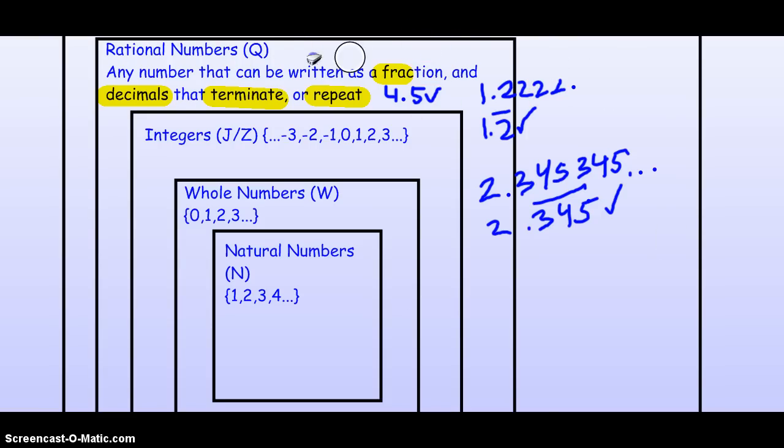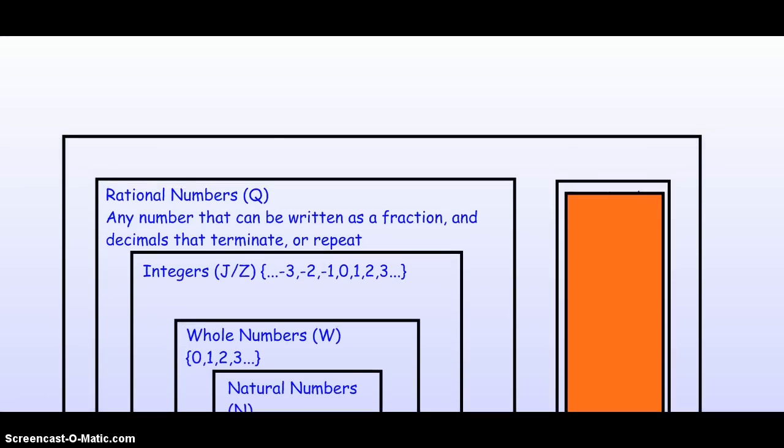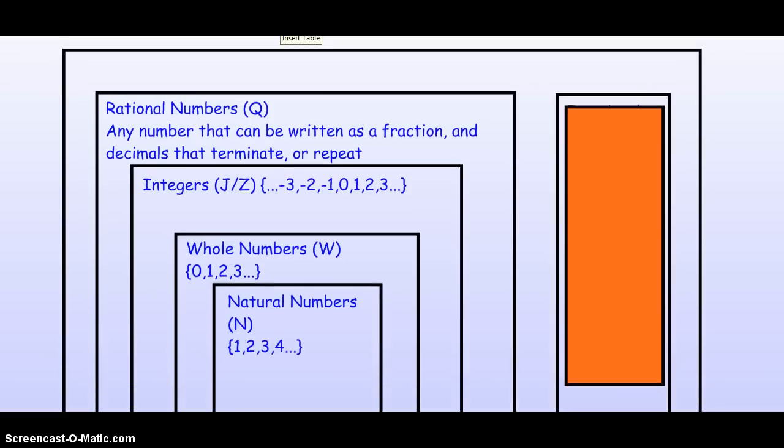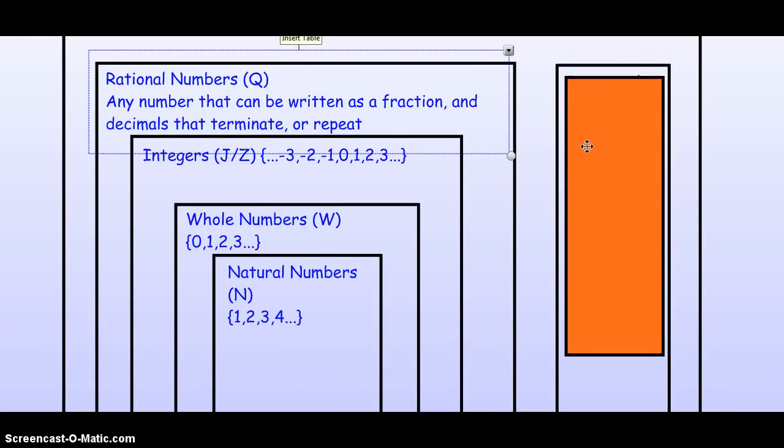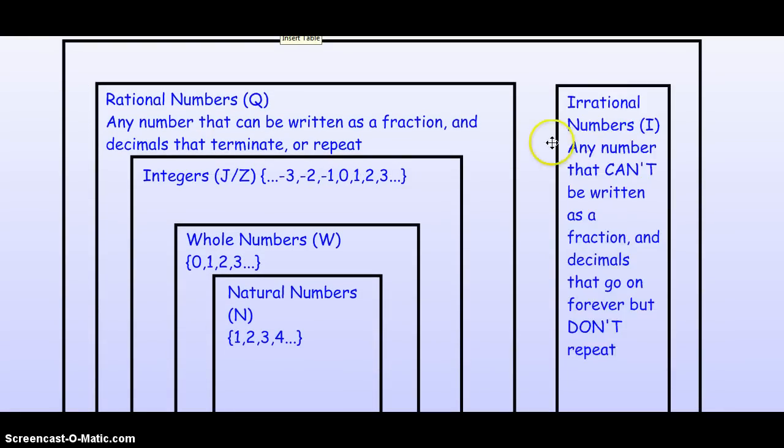Now, let's look at the different set, which is basically the opposite of rational numbers. So, the set that is opposite of rational numbers is called irrational numbers. This is abbreviated by the capital I.